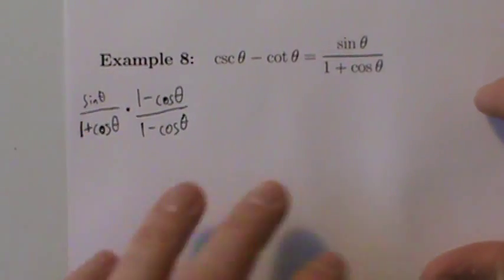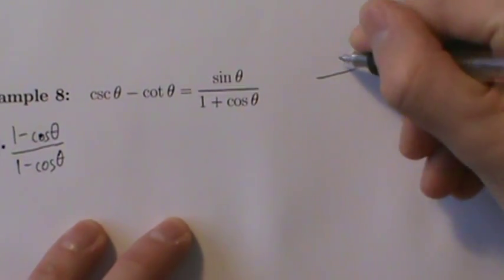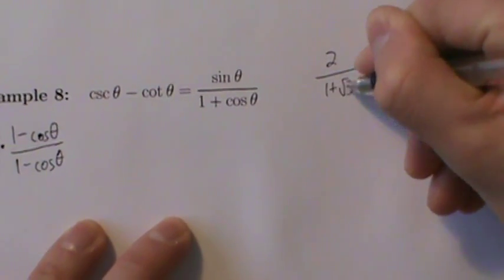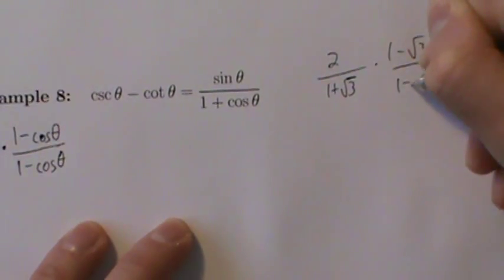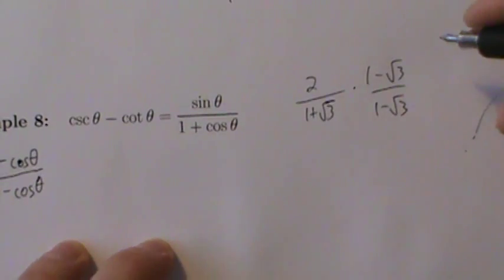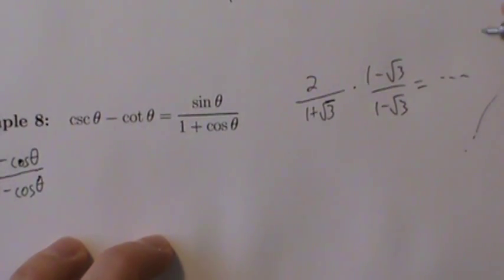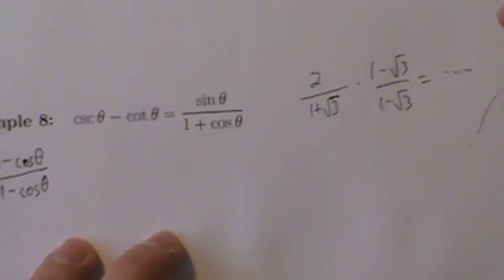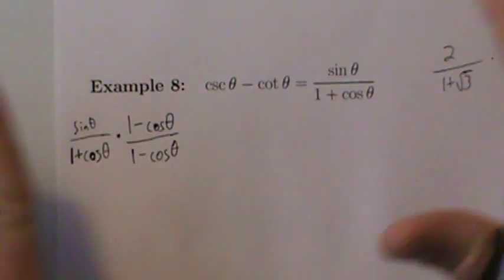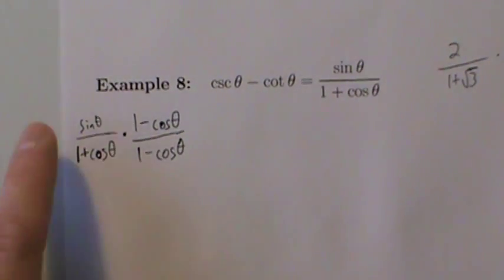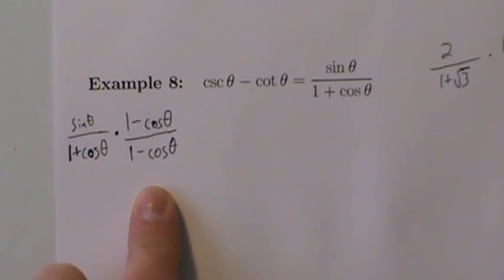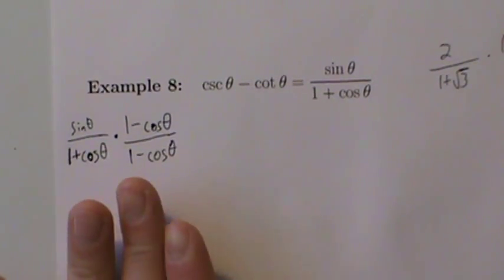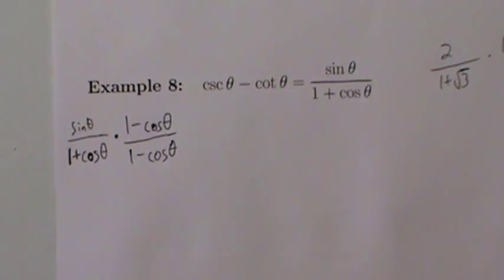This is similar to rationalizing the denominator. For example, with 2 over (1 + √3), you multiply top and bottom by (1 − √3) to rationalize the denominator. The exact same concept applies here — it may not always work, but it's worth trying.